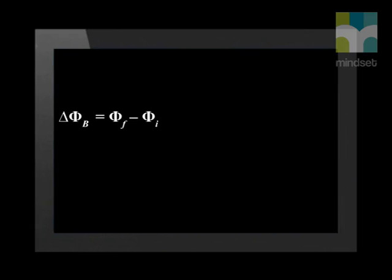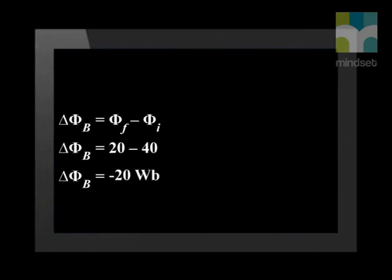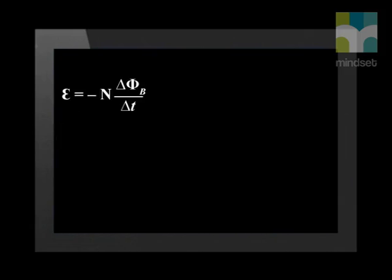So the change in magnetic flux is the final magnetic flux minus the initial flux. The difference is negative 20 Weber. The magnetic flux decreases because, as the square is rotated, fewer magnetic field lines cut through it. Now for the induced EMF — write down Faraday's formula to calculate the EMF. There is only one turn in the square loop, so N has a value of 1. We calculated that the change in magnetic flux is negative 20, and the time in which the rotation took place was 4 seconds. That gives us 20 divided by 4, which equals 5. The unit for EMF is volts, so the induced EMF is 5 volts.